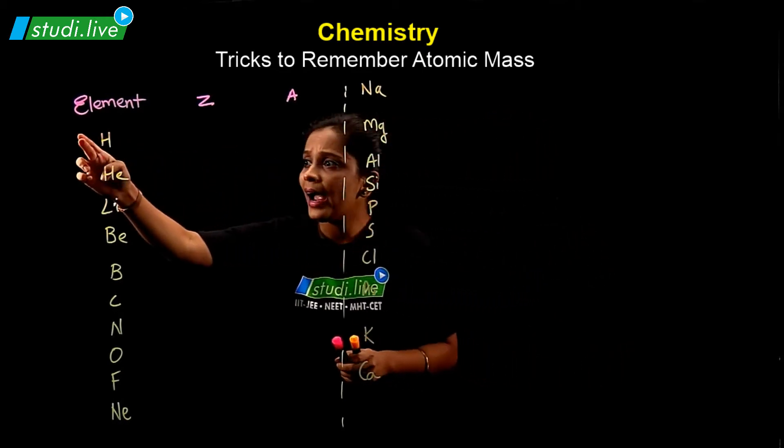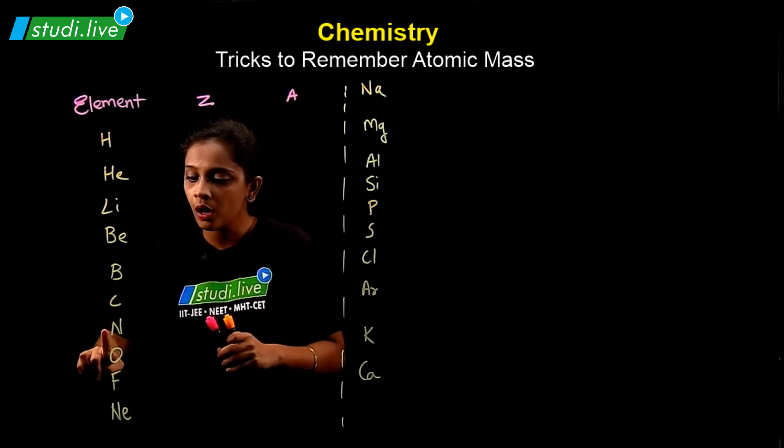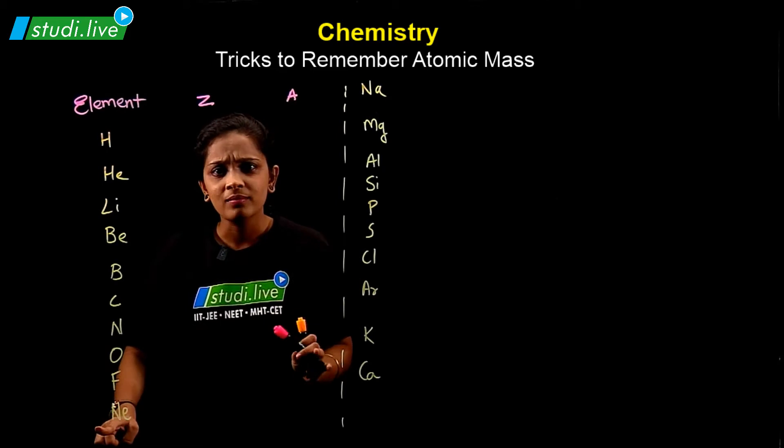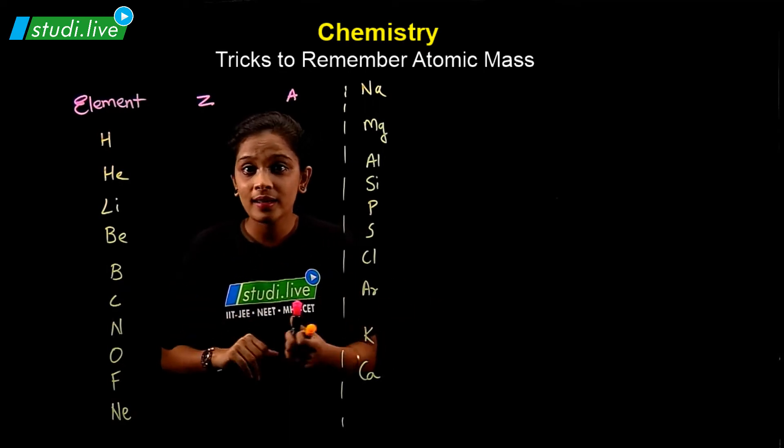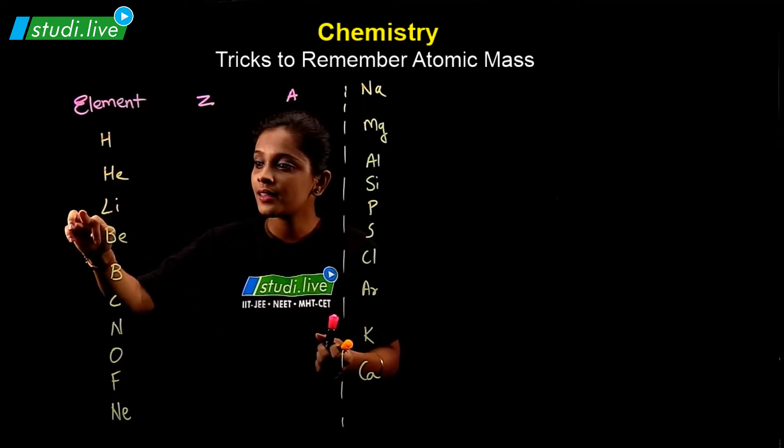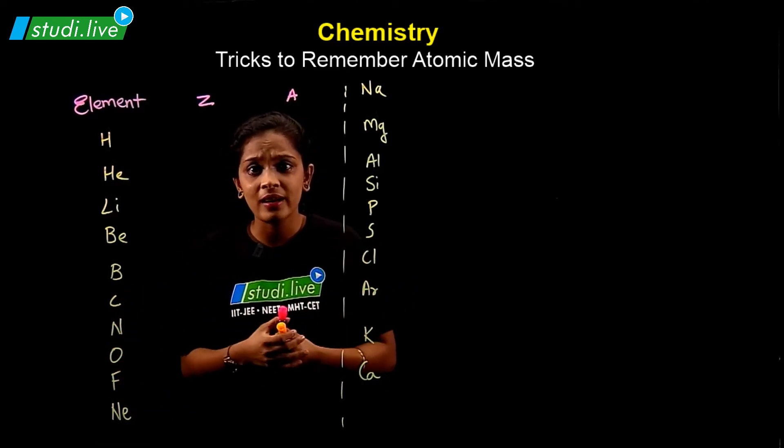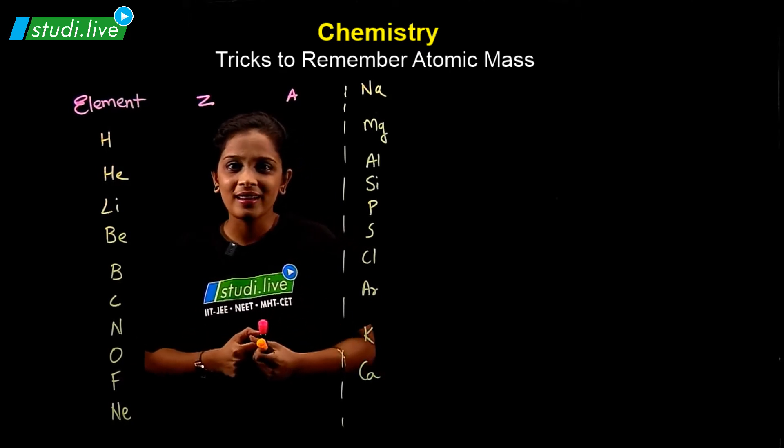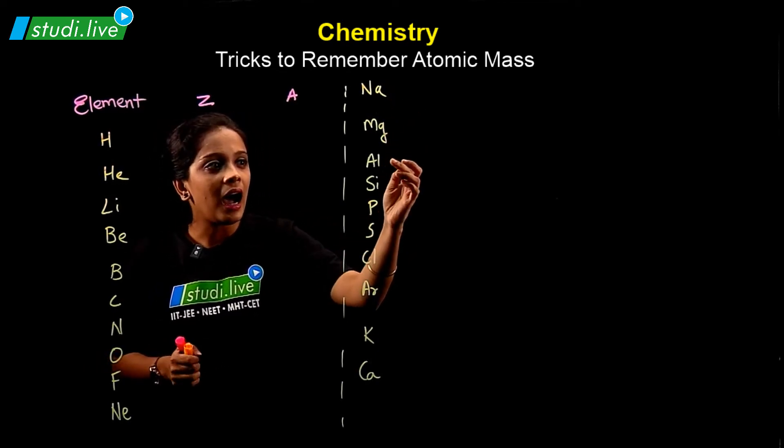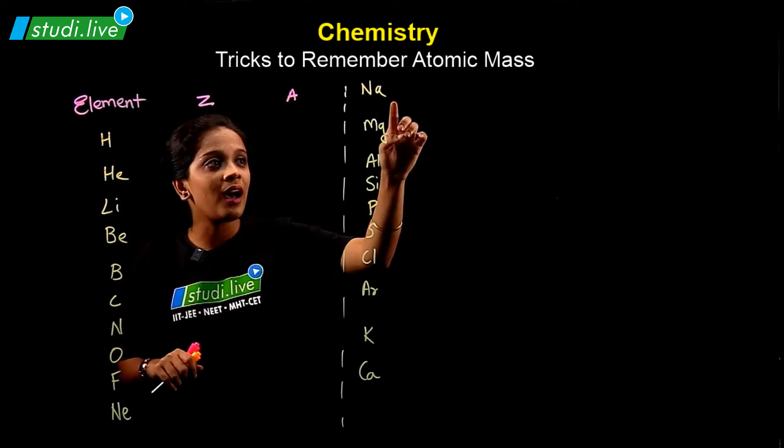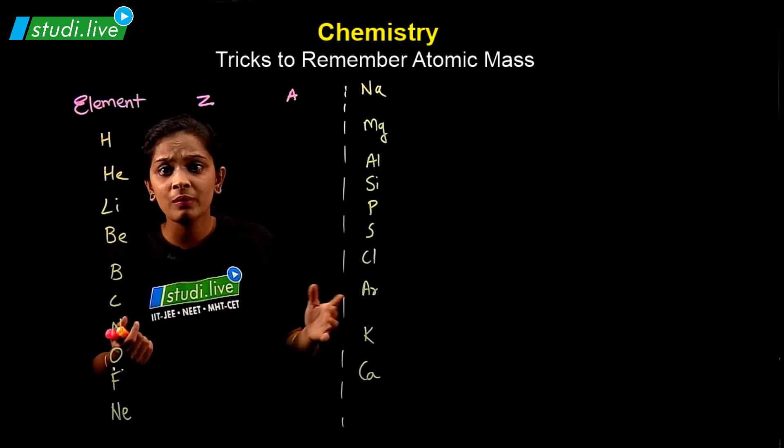In an easier manner, you can say hydrogen, helium, little beautiful baby could not overfly neon. Or else you can say hi, hello, listen BBC news on Friday night. Your teacher must have explained this. I'm just adding a few more shortcut tricks. Na Mg Al Si, on Sundays we sleep more. So Na Mg Al Si, then S Cl Ar. This is the trick to remember the elements.